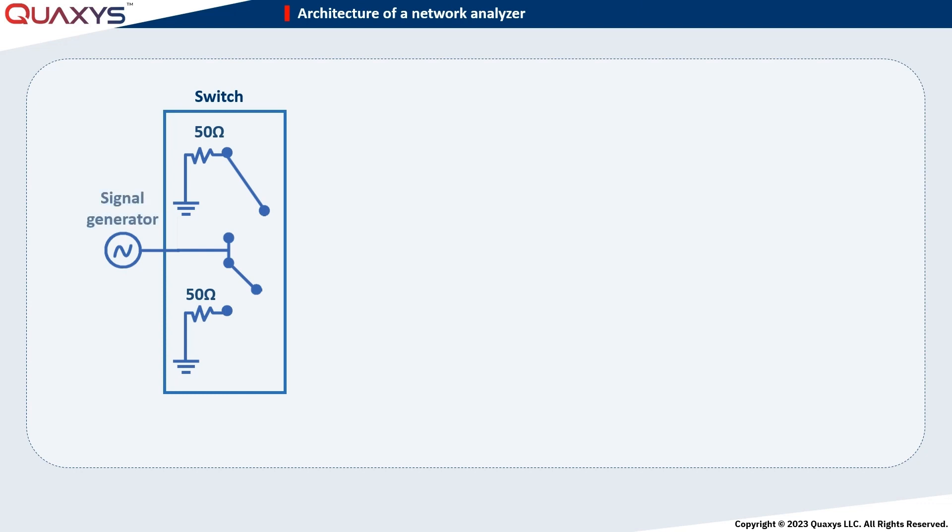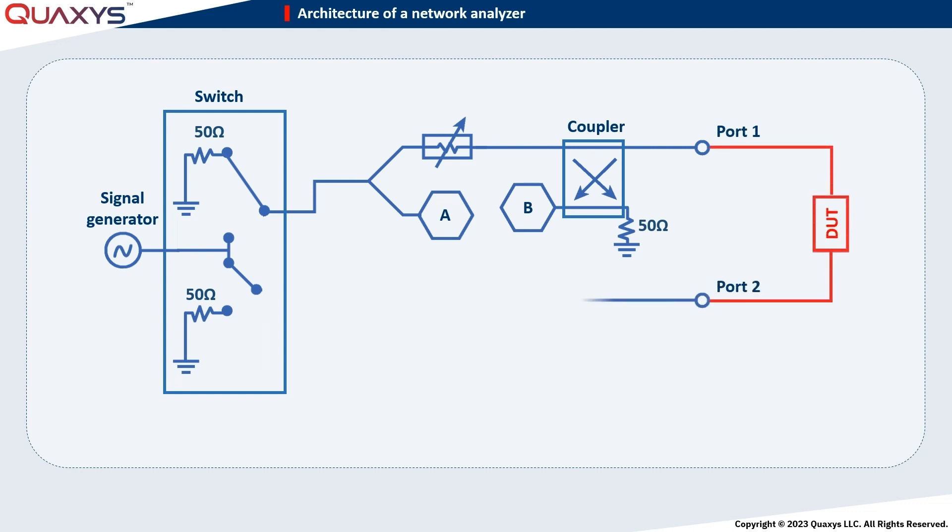Now, focusing on the scenario where the signal is injected into port 2, the generated signal traverses a switch and encounters a power divider, which equally splits the signal between its arms. One arm of the power divider contains a variable attenuator to adjust the power level, while the other arm connects to a detector, referred to as detector C. Subsequently, the signal from the upper arm proceeds through a coupler and interacts with port 2, where the device under test is connected.